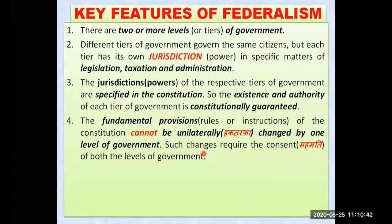If there are three or four levels of government in federalism, the central government will have to take consent from all of them to make changes in the constitution. Neither the central government nor the state government can make changes in the constitution by themselves alone — they will have to take consent from the others as well.